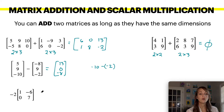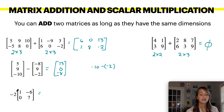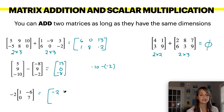You also can multiply by a scalar — a number in front. You would just multiply negative two by everything. Negative two times one is negative two. Negative two times negative six is positive twelve. Negative two times zero is zero. And negative two times seventeen is negative thirty-four.